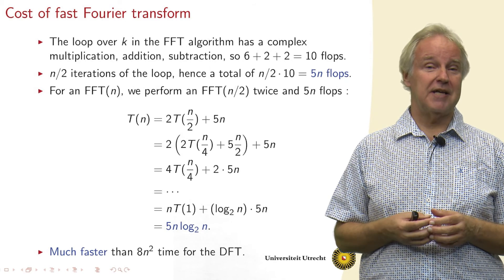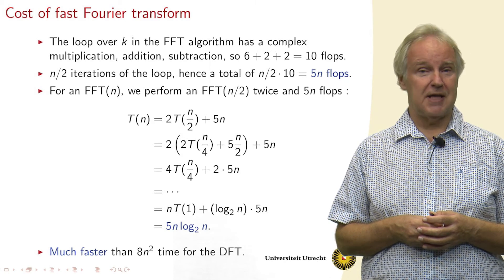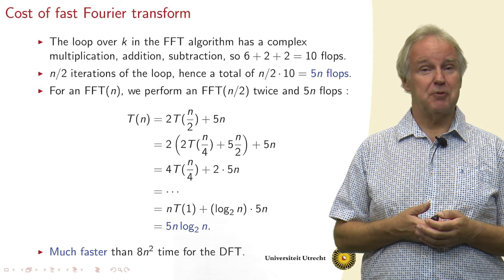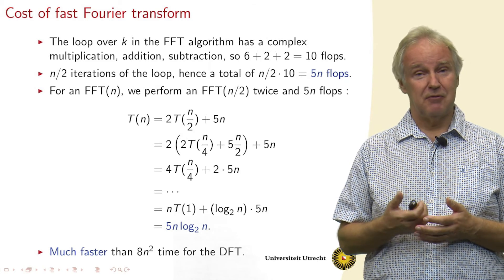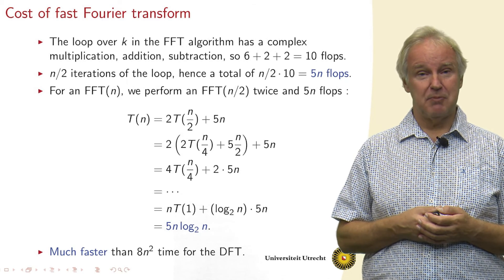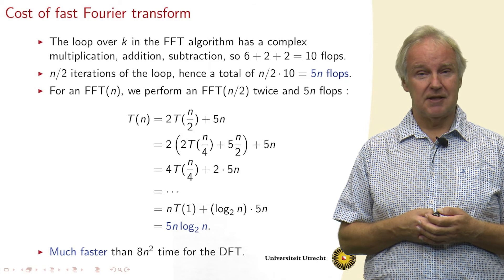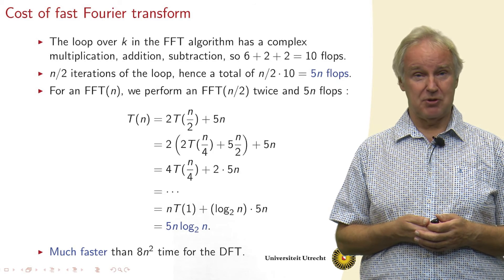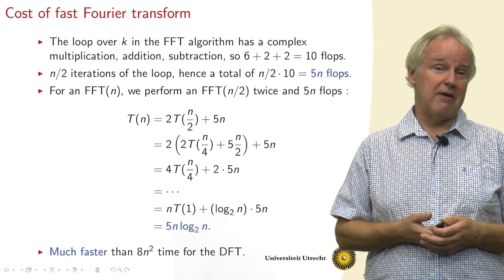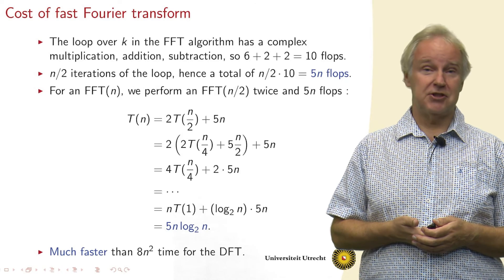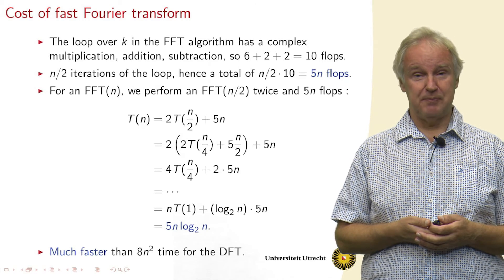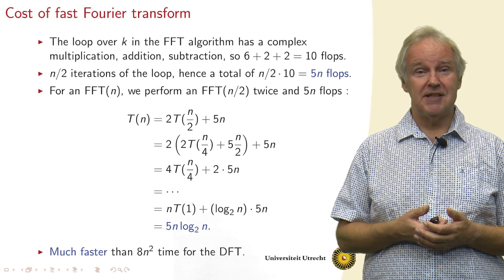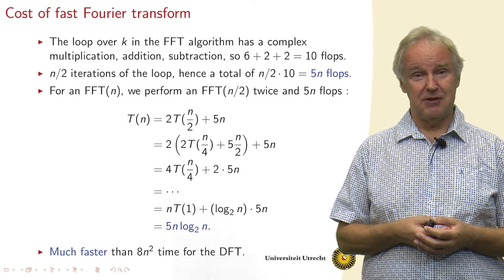And with this, we can find the number of real flops that our total algorithm has. In the inner loop, we need to add tau, subtract tau, and also multiply omega_n to the power k with a number giving tau. This is altogether a multiplication—four flops—and an addition. We get four flops from the addition and the subtraction, and six flops from the multiplication. Altogether ten flops. We have a loop which runs n/2 iterations, each ten flops. So altogether five n flops in the loop. And let's not forget, we also have to perform two FFTs of a smaller size, of size n/2.